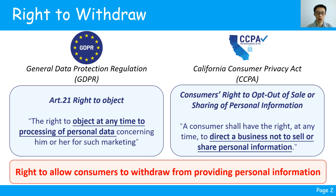Recently, popular privacy regulations often allow consumers to withdraw the provided personal information. For example, GDPR introduced the right to object, allowing consumers to withdraw business processing of their privacy. Similarly, CCPA introduced the consumer's right to opt out of the sale or sharing of personal information, asserting consumers' ability to request businesses not to sell or share their personal information at any time. The violation of these regulations may result in serious user privacy leakage.